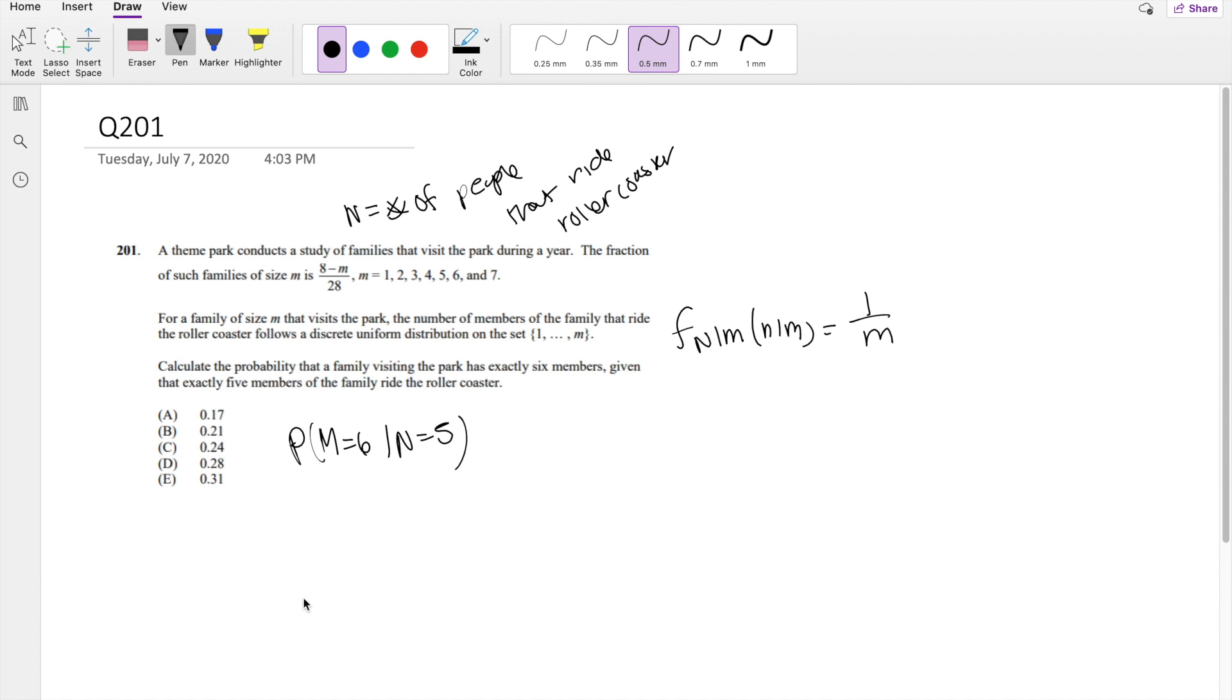If you don't remember the Bayes theorem, you can always derive it real quick. So you know the probability of n given m is equal to the probability of n and m divided by the probability of m. So this we know, and we know this one is equal to the probability of m and n divided by the probability of n, right?